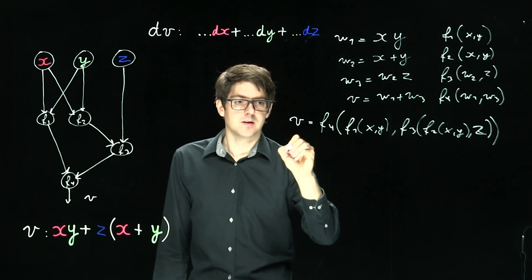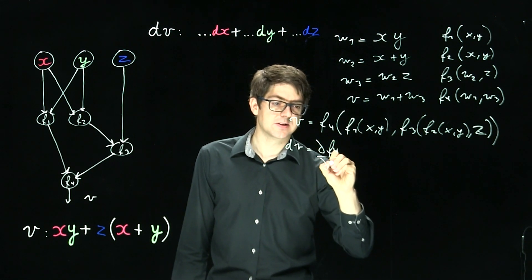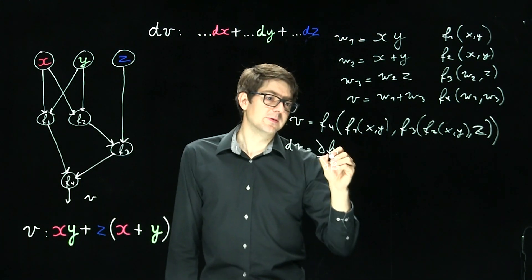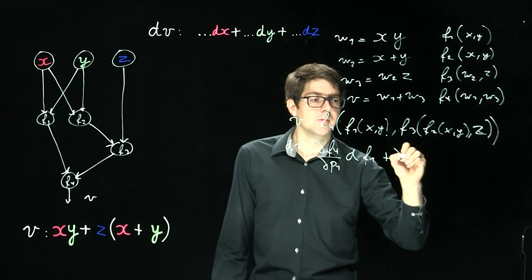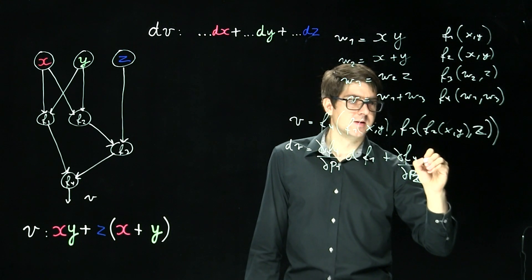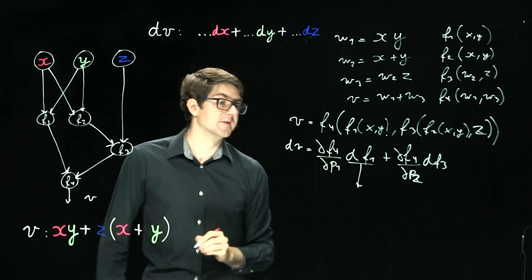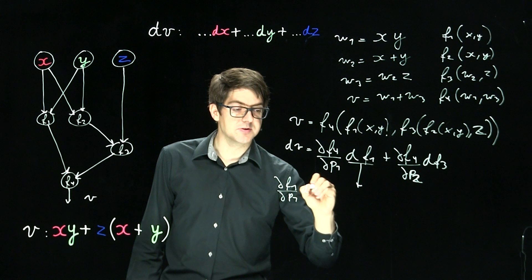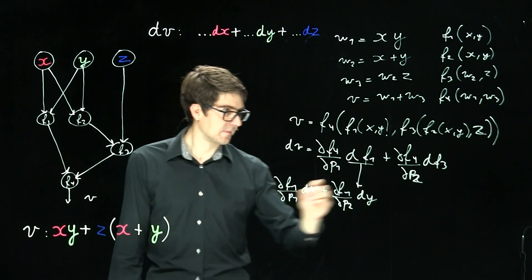So how do we compute the derivative of this? The total derivative of v. The dv is the partial of f4 with respect to its first argument. And I'm inventing this notation with a p to denote the first argument. So derivative of f4 with respect to the first. Times the differential of the first input. Plus partial of f4 with respect to the second. Times f3. Now we can go further and expand these as we go. So f1 in itself is given by partial f1 with respect to p1 times dx plus partial of f1 with respect to the second argument times dy.